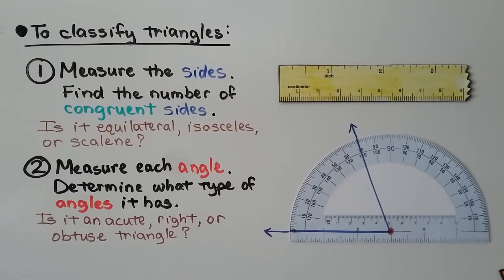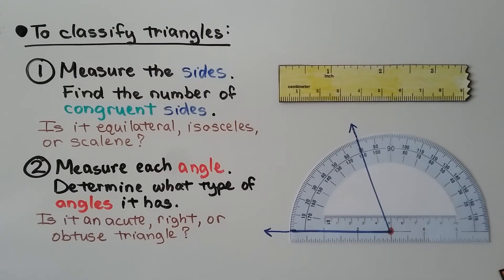So to classify triangles: first, measure the sides and find the number of congruent sides — is it equilateral, isosceles, or scalene? Then second, measure each angle with a protractor and determine what type of angles it has — is it an acute, right, or obtuse triangle?